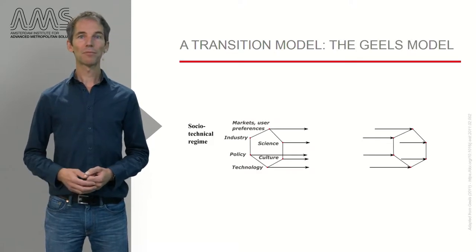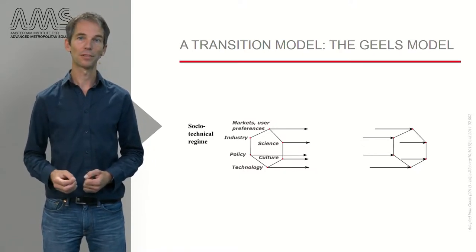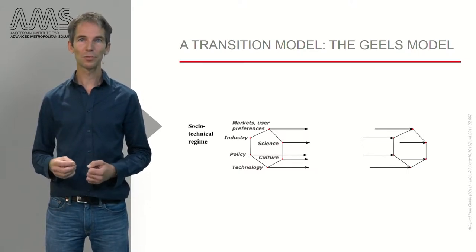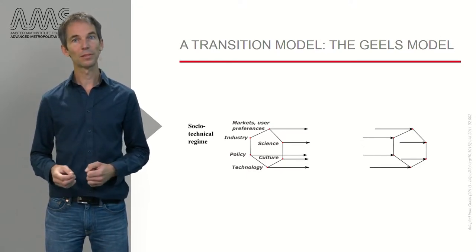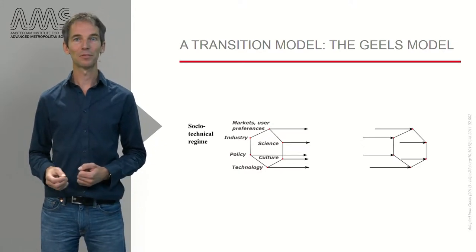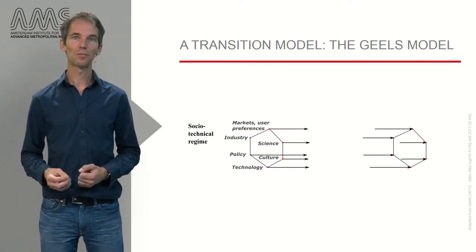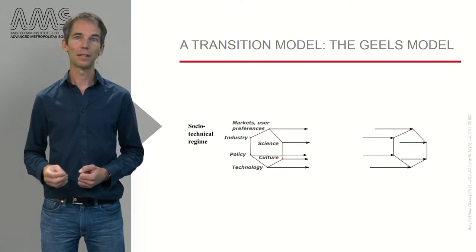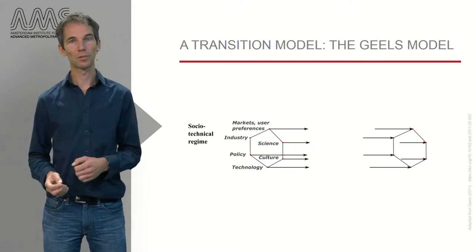Let me start with Frank Geels' elaborate figure on transitions. The essential part of this figure, and in the transition, is the change of a socio-technical regime. A regime comprises the whole set of current markets, industries, supply chains, policies, technologies, as well as people's practices, habits and routines in a certain sector of society. For energy, that would mean our current fossil fuel-based system of electricity grids, our domestic energy practices, the energy utilities and markets, and the rules and regulations around production and consumption of energy.